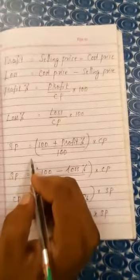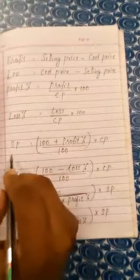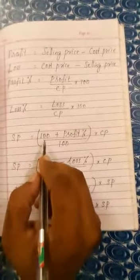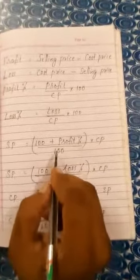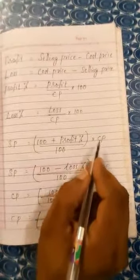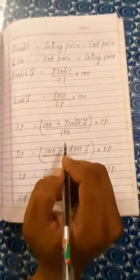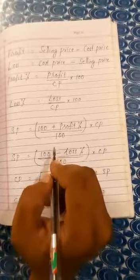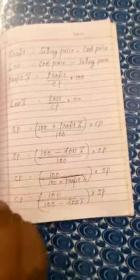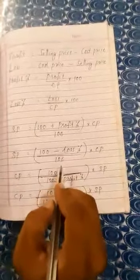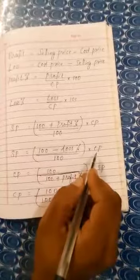If cost price and profit percent are given, then selling price is equal to (100 plus profit percentage) upon 100, multiplied by CP. If cost price and loss percent is given, then selling price is equal to (100 minus loss percent) divided by 100, multiplied by CP.